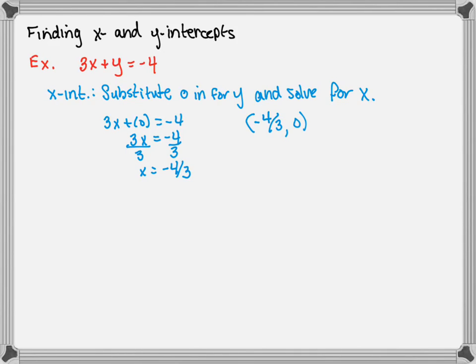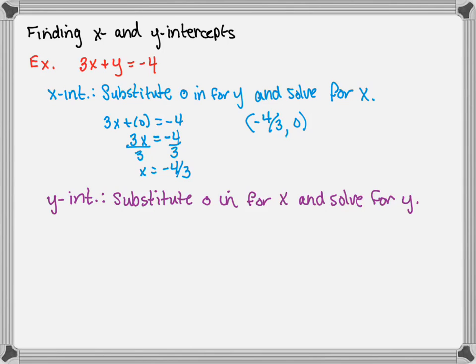We can have more than one x-intercept in some cases, or we may have none at all. To find the y-intercept, substitute 0 in for x and solve for y. Doing that here: 3 times 0 plus y equals negative 4, so simply y equals negative 4. Our y-intercept for this equation is (0, −4).